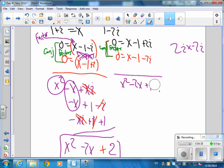So negative times a negative will be plus 4. So this turns into that.